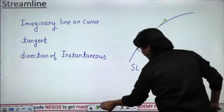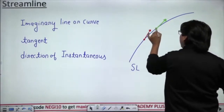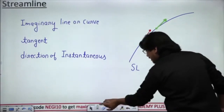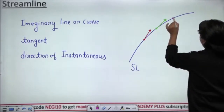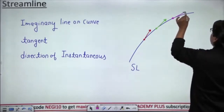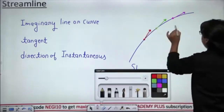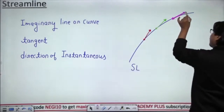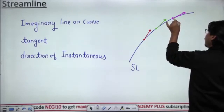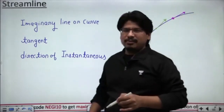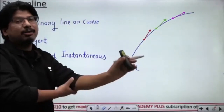What is the meaning of this tangent? This tangent gives the direction of the instantaneous velocity of the fluid particle present at this point. Similarly, drawing a tangent at another point gives the direction of instantaneous velocity of the fluid particle present there.